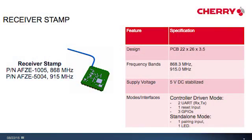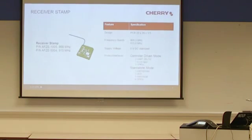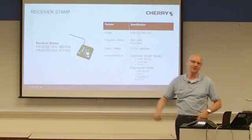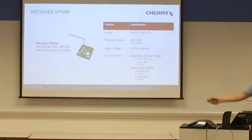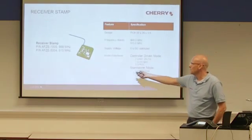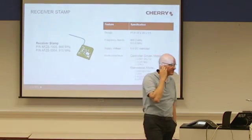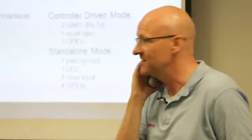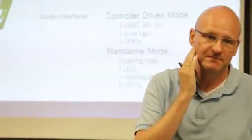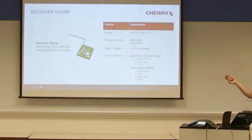Now we come to the RF stamp. The RF stamp is the RF heart of the receiver. For the RF stamp, the same situation applies as for the packed receiver: you need to pair senders to the RF stamp, and therefore you have to switch the RF stamp into pairing mode. But where is the button on the RF stamp? There is no button and there is no LED on the RF stamp — so we have a problem: how can we switch the RF stamp into pairing mode?